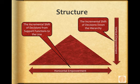So the incremental suspension of control has two effects on structure. It has a vertical effect, which you can call vertical empowerment, which is concerned with the incremental shift of decisions down the hierarchy. And there's a horizontal effect, which you can call horizontal empowerment, which is concerned with the incremental shift of decisions from support functions to the line.